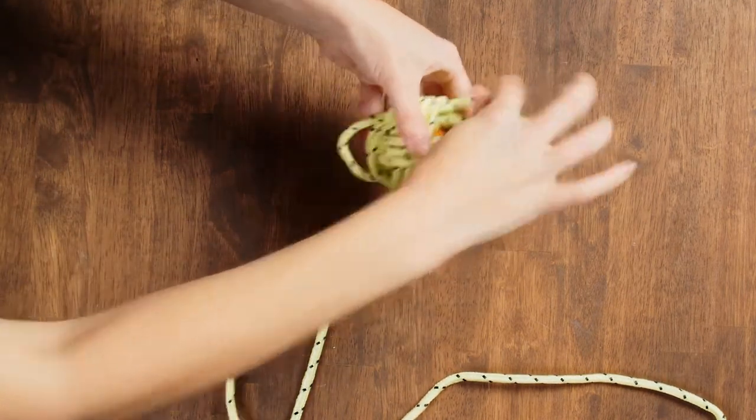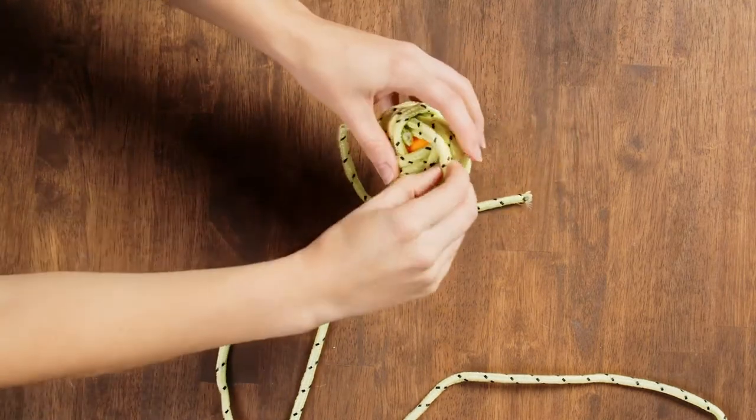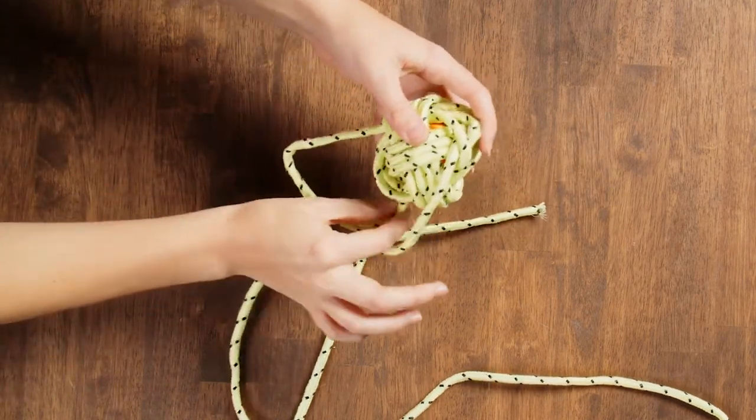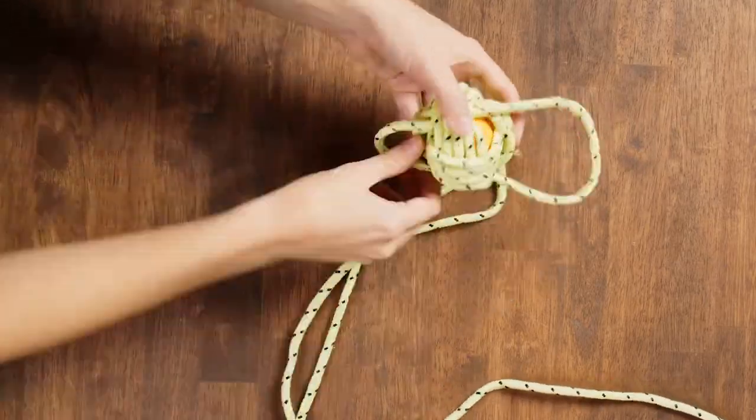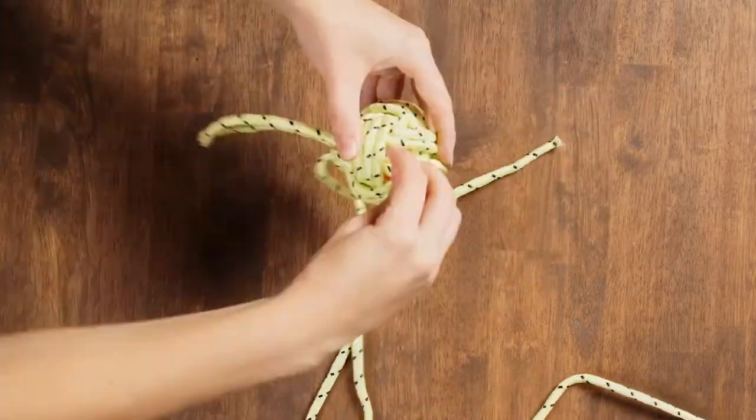Now get ready. This is the fun part. Pull the rope so it becomes tightened from where you pushed in the ends of the rope. Continue pushing and pulling the rope slack tight through all of your loops until the ball is tight.